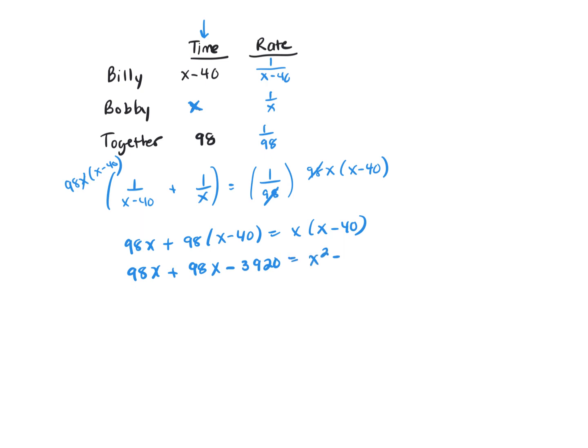Equals X squared minus 40X. Now let's combine like terms on the left-hand side, and that gives you 196X minus 3920, equal X squared minus 40X.